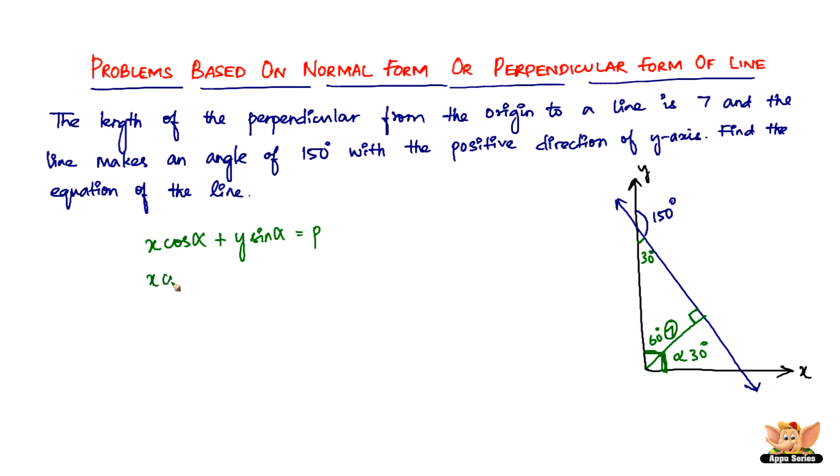So it'll be X cos 30 degrees, which equals root 3 by 2, so it'll be X times root 3 by 2, plus Y times half equals 7.